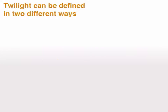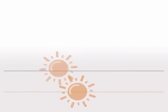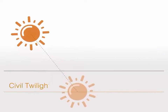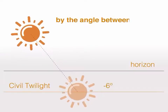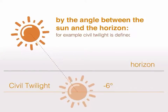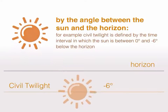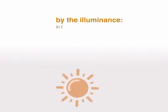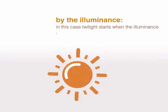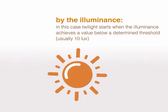Twilight can be defined in two different ways: by the angle between the sun and the horizon — for example, civil twilight is defined by the time interval in which the sun is between zero and six degrees below the horizon — or by illuminance, in which case twilight starts when the illuminance achieves a value below a determined threshold, usually 10 lux.